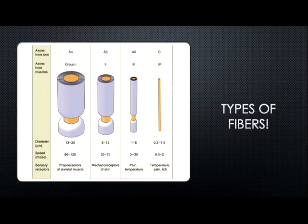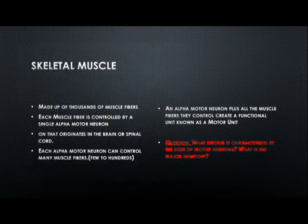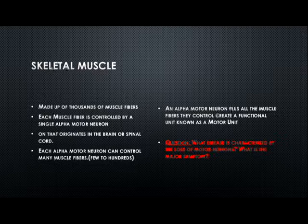A thought question: which cell in the peripheral nervous system myelinates axons? And which cell myelinates axons in the central nervous system? What is the difference between those two cells? The answer: Schwann cells for the peripheral nervous system and oligodendrocytes for the central nervous system. The key difference is that a Schwann cell can only myelinate a single axon for one neuron, whereas oligodendrocytes can myelinate many — up to tens or dozens of axons.